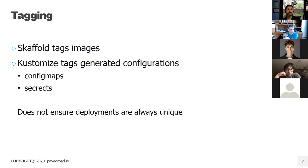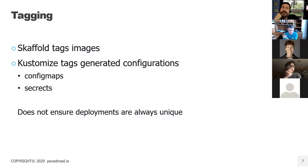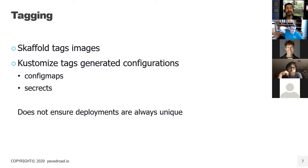On tagging: Scaffold tags images and Kustomize tags config maps and secrets to generate unique configurations. However, this doesn't ensure all deployments are unique. If you have two instances of an application running — one from branch A, one from branch B — the config maps will be unique, but the deployment name itself isn't tagged, so you still have namespace collisions on service names and deployment names.